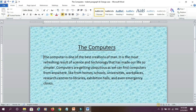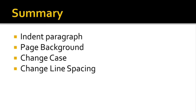So in this way we have seen that we can change the indent of a paragraph, change the page color and page texture, change the case of sentences, and change the spacing between two lines by going to the appropriate options and applying those effects.